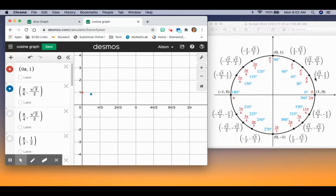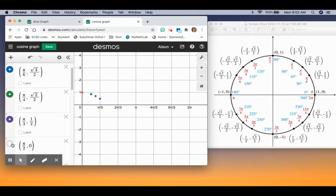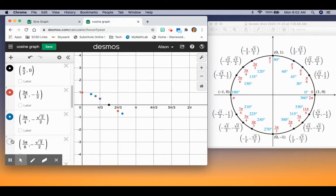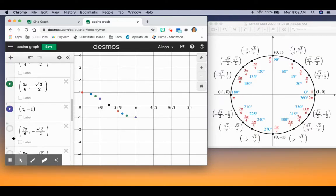At π/6, our x-coordinate is √3/2. At π/4, it's √2/2. At π/3, it's 1/2. And at π/2, it's zero. I'm going to keep clicking all the way around so you can see what these points look like.